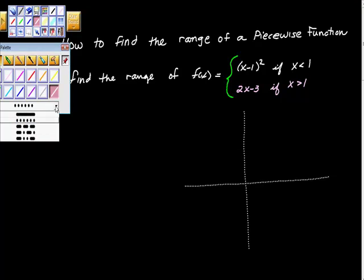Now, when we say we're looking for the range of something, what we mean is we're looking for what are all possible y-values. Not what are all y-values, what are the possible y-values? And if you can see here, this piecewise function splits at x is 1.